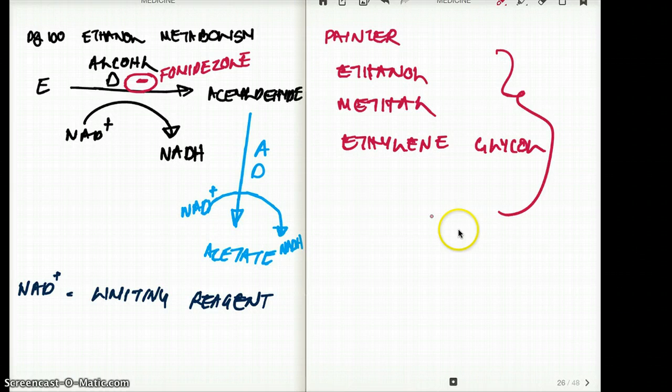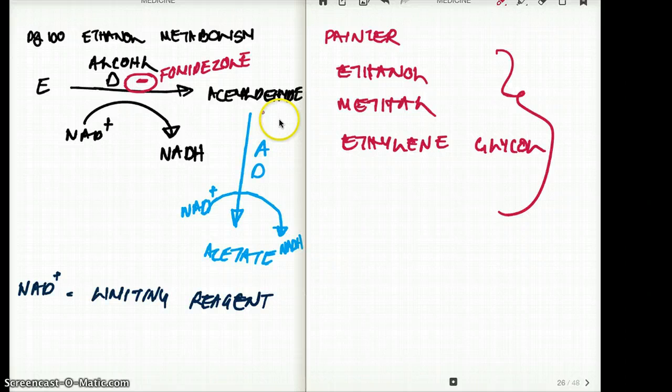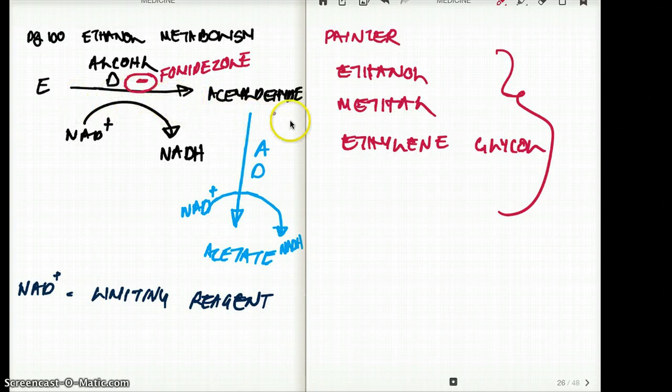All these substances can be broken down by alcohol dehydrogenase to acetaldehyde. If you're having severe symptoms from too much acetaldehyde in your system, you can give them fomepizole by inhibiting the process of making acetaldehyde so fast.